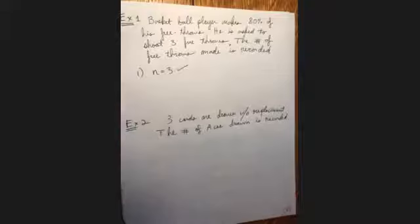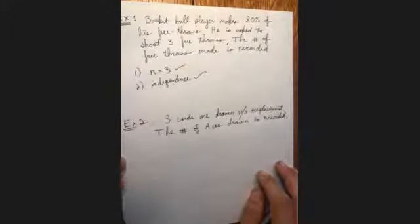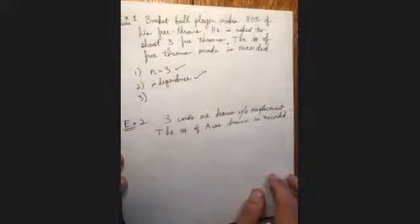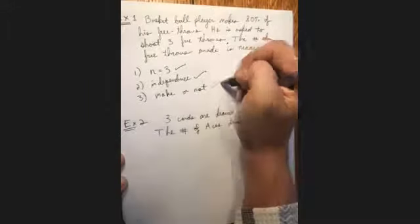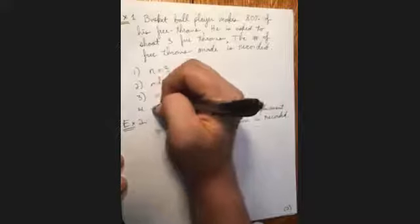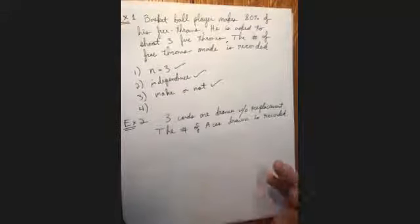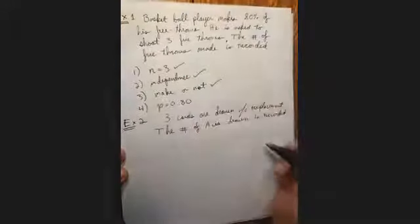Next, all trials must be independent. Each throw of the basketball is independent from its previous throw — they don't affect one another. Check. We also need two mutually exclusive options per trial: he can either make the shot or not, so that is two options. Finally, we need a fixed probability of success. The probability of success was determined empirically based on this player's stats, and we're told to expect 80%, which is fixed. All of this together tells us that we have a binomial experiment.